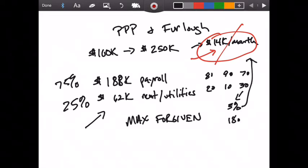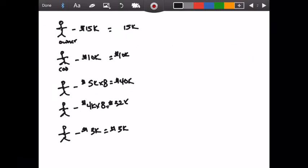So let's look at the example. Here's how my payroll shakes out: I've got an owner making $15,000 a month, a COO making $10,000 a month, some higher level worker bees making $5,000 a month, some lower level worker bees making $4,000 a month, and then a part-timer making $3,000 a month. The distribution doesn't really matter in terms of whether they're hourly or salary for this exercise.